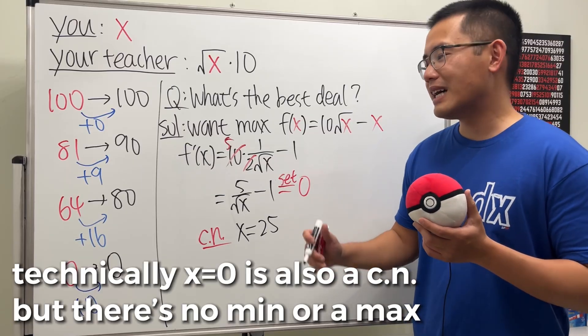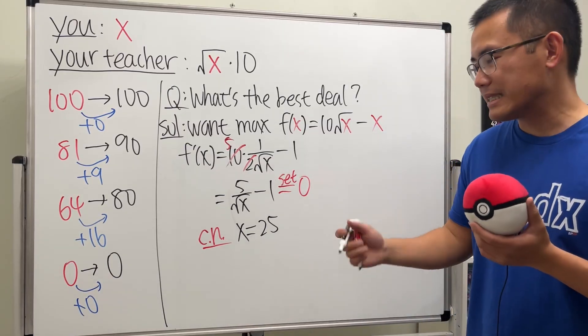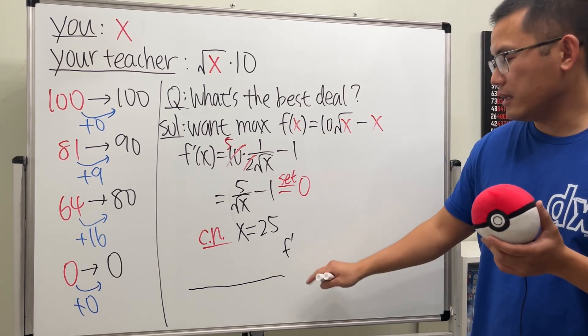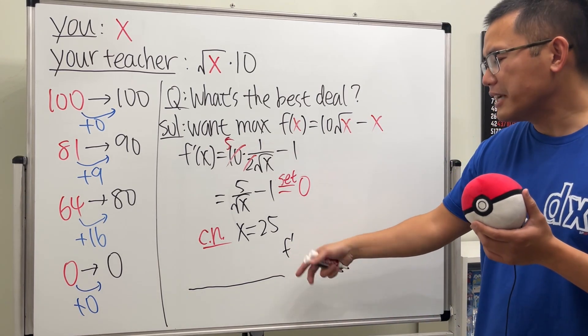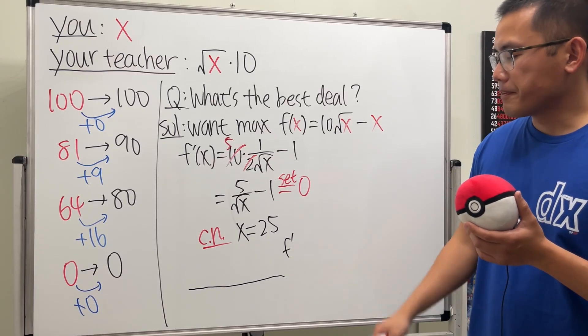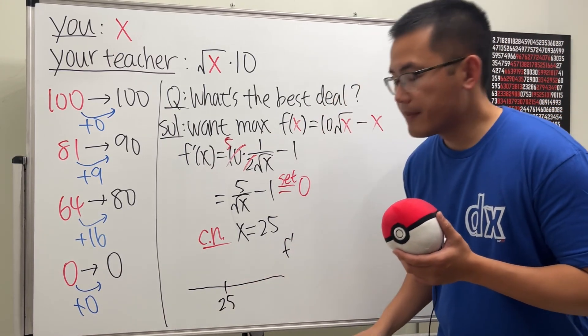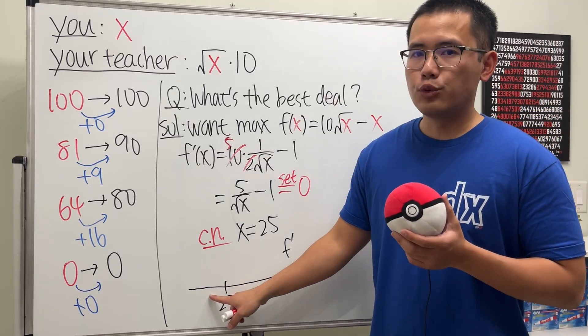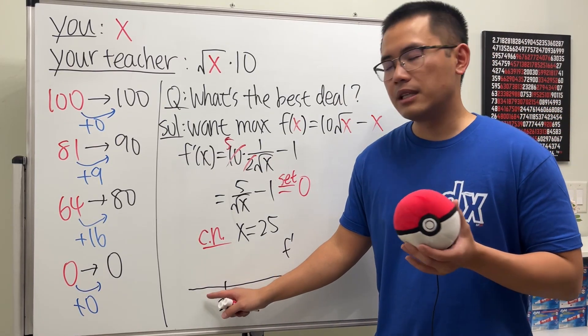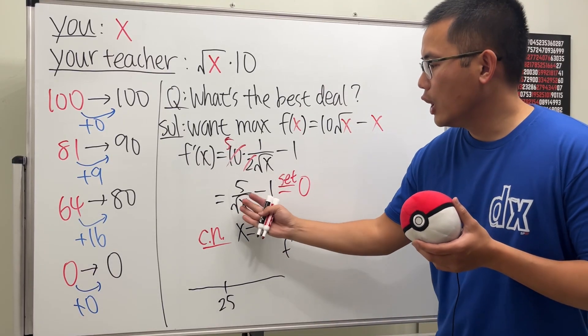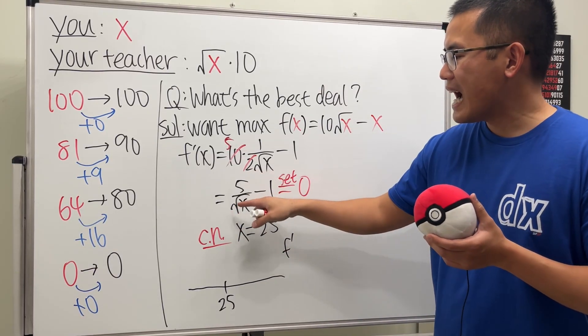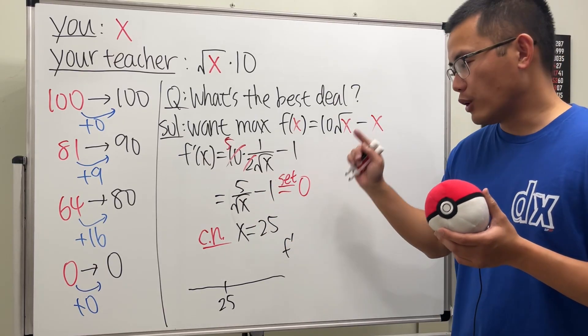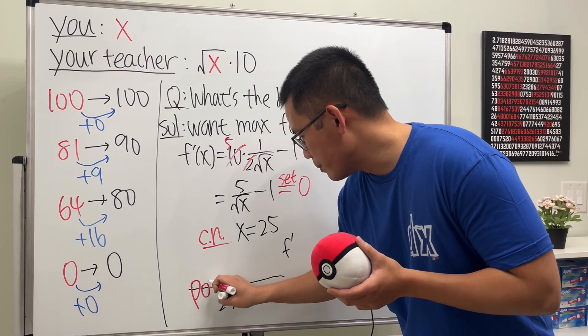And now we just have to make sure that it will give us a maximum. So let's do the first derivative test, meaning we look at the number line for, like a sign chart for f prime. So let's go ahead and put down 25. And to do the first derivative test, we pick a number less than 25. And let's use 16 because it's easier. If we put 16 here, we'll get 4 on the bottom. 5 over 4 is 1.25. And then minus 1 is positive. That's all you have to know. So this part will be positive.